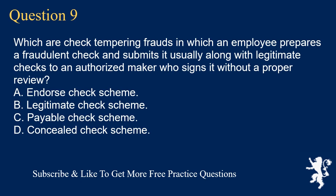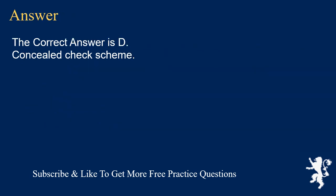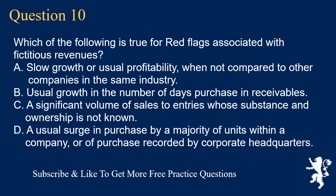Question 9: Which are check-tampering frauds in which an employee prepares a fraudulent check and submits it, usually along with legitimate checks, to an authorized maker who signs it without a proper review? A. Endorsed check scheme. B. Legitimate check scheme. C. Payable check scheme. D. Concealed check scheme. The correct answer is D. Concealed check scheme.